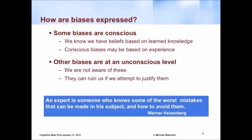So how are biases expressed? Some are on the unconscious level, some are on the conscious level. When we say they're on the conscious level, we base them on the knowledge that we have — we consciously make a decision; we perceive something, and therefore our bias becomes conscious based on our perceptions. On the unconscious level, this is where many of the biases occur — we don't even realize the bias exists.